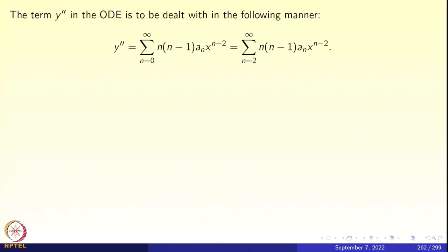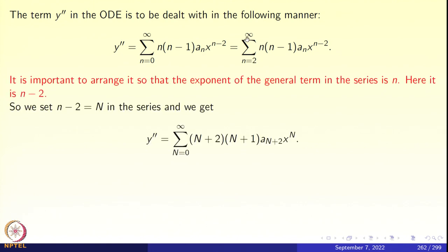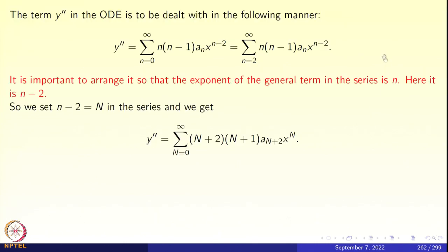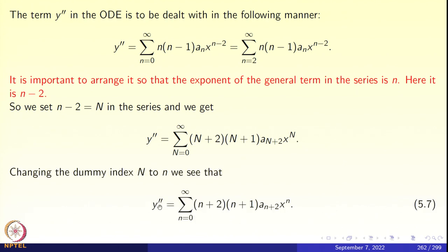We also need to handle the y'' term. y'' = Σ_{n=0}^∞ n(n−1) aₙ x^{n−2}, but the n=0 and n=1 terms are 0, so the sum starts from n=2. It is very important that all exponents of x in the general term be the same — the three previous terms have xⁿ, but here we have x^{n−2}. We substitute n−2 = N: when n runs from 2 to ∞, N runs from 0 to ∞, giving y'' = Σ_{n=0}^∞ (n+2)(n+1) a_{n+2} xⁿ (equation 5.7).